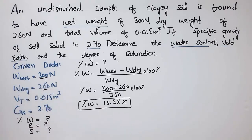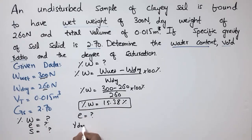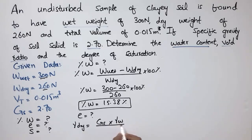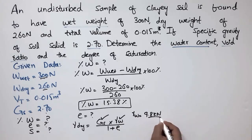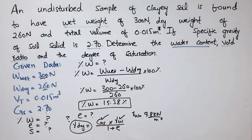The second part is to find the void ratio E. To find E, we use the formula: γ_dry = Gs × γ_w / (1 + E). Here Gs = 2.7 and γ_w = 9.8 kN/m³ are known, but γ_dry is also unknown. So first we must find γ_dry, then we can solve for E.